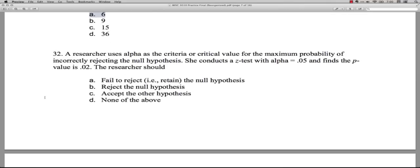Question 32. A researcher uses alpha as the criteria or critical value for the maximum probability of incorrectly rejecting the null hypothesis. She conducts a z-test with an alpha of .05 and then finds the p-value is 0.02. The researcher should make a decision of some kind. The important thing to remember here is that we are looking at regions of rejection. When it says alpha of .05, that means the most extreme 5% of the distribution, the top two and a half and the bottom two and a half. If you have a p-value, that is the probability of getting your observed statistic through random sampling, through error where there's no difference.